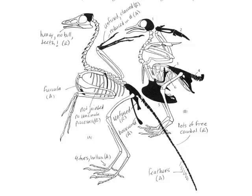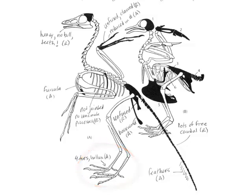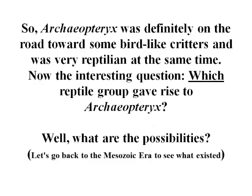Finally, the legs and toes contain both avian and reptilian characteristics. The fibula is as long as the tibia — that's reptilian — but there are four toes with one opposing the others, which is very bird-like. So Archaeopteryx was very intermediate in many respects between reptiles and birds — definitely on the road toward a bird-like critter, but reptilian at the same time.